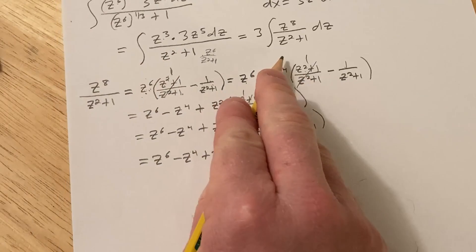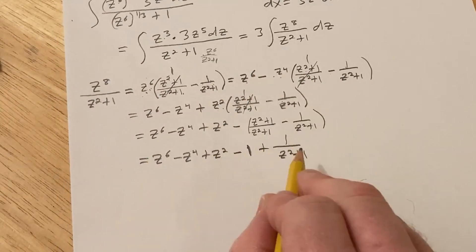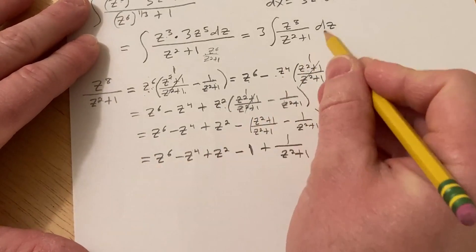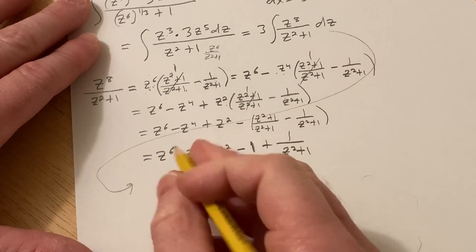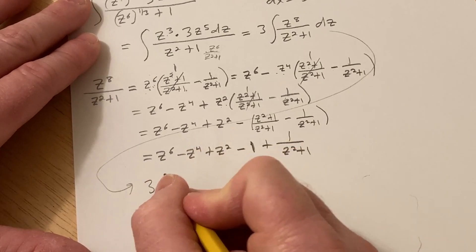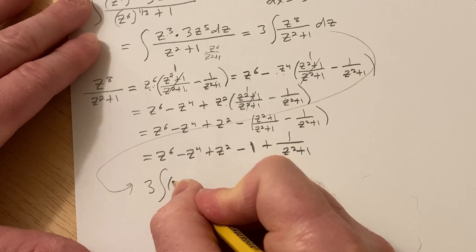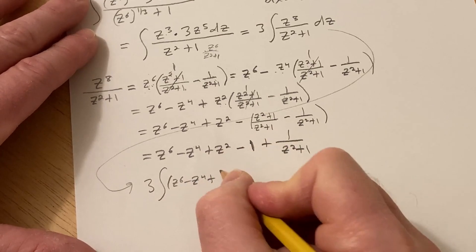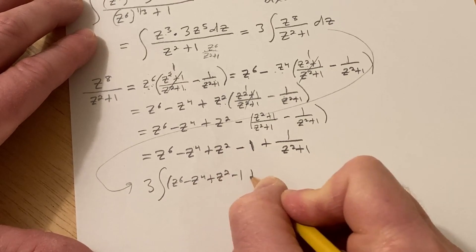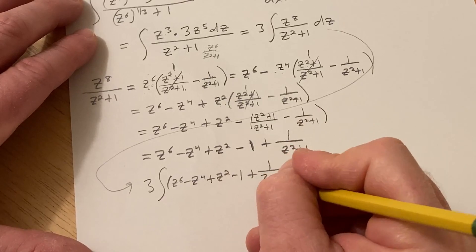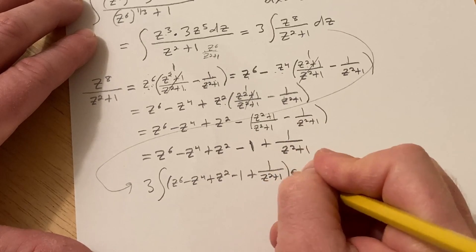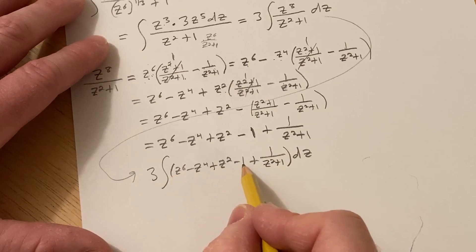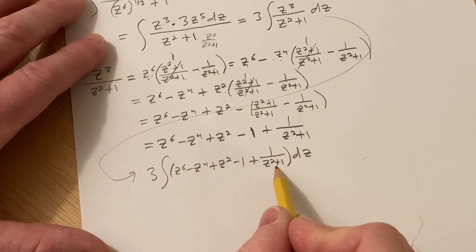Now we have 3 times the integral of all of this. It'll be z^6 minus z^4 plus z^2 minus 1 plus 1/(z^2+1) dz. Really nice. We can just integrate all of this very easily. All of these are the power rule. This is going to give a z. This is going to give us an arctangent.